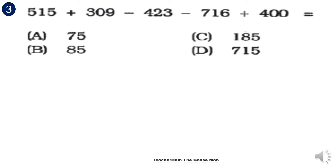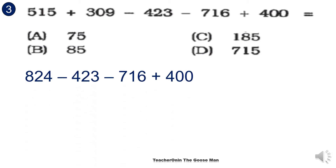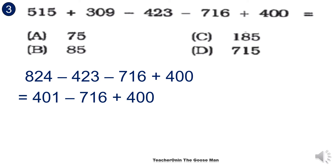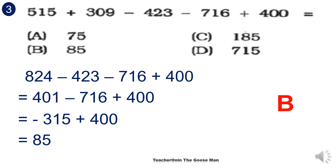Let's have another operation involving addition and subtraction. We will perform operations from left to right. So 515 plus 309 gives 824, minus 423 minus 716 plus 400. Then 401 minus 716 gives negative 315 plus 400, so the final answer is 85. The correct answer is letter B.